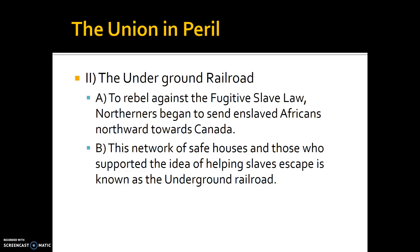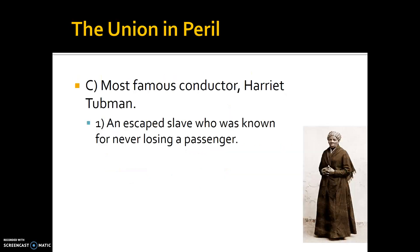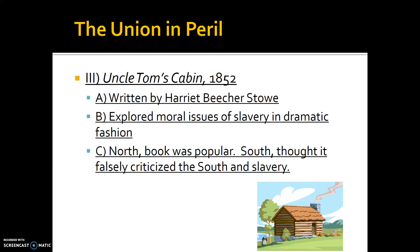To rebel against the Fugitive Slave Law, Northerners began sending enslaved Africans northward toward Canada, because the North was no longer a safe place for the Underground Railroad to operate — they had to extend it all the way to Canada. The Underground Railroad had famous figures like Harriet Tubman and Frederick Douglass. Then we have Uncle Tom's Cabin, written in 1852 by Harriet Beecher Stowe. It was a novelization of the average life of a slave in the South, exploring the moral issues of slavery dramatically. The book was extremely popular in the North and became a big push for abolition, while the South felt it falsely criticized the Southern way of life.